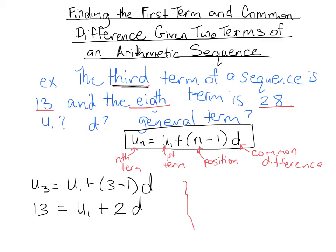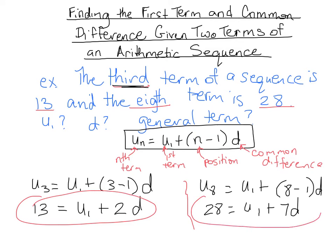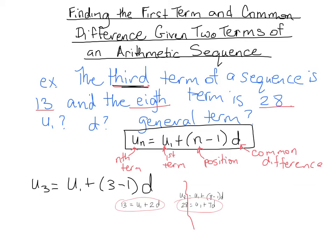Alright so then you want to do the same thing for the other term, the eighth term which is 28. So we would write u8 equals u1 plus 8 minus 1d which u8 we know is 28 so it's u1 plus 7d. Alright so now we actually have 2 equations and 2 unknowns. This should sound familiar to you. If you have 2 equations and 2 unknowns you can solve them simultaneously. Let's turn the page to see how.